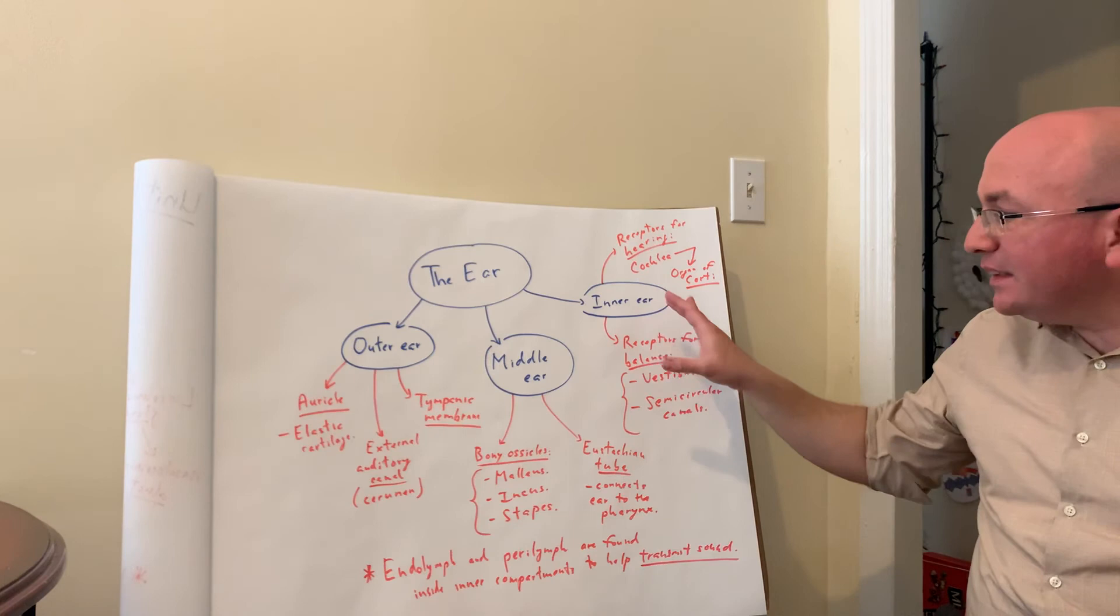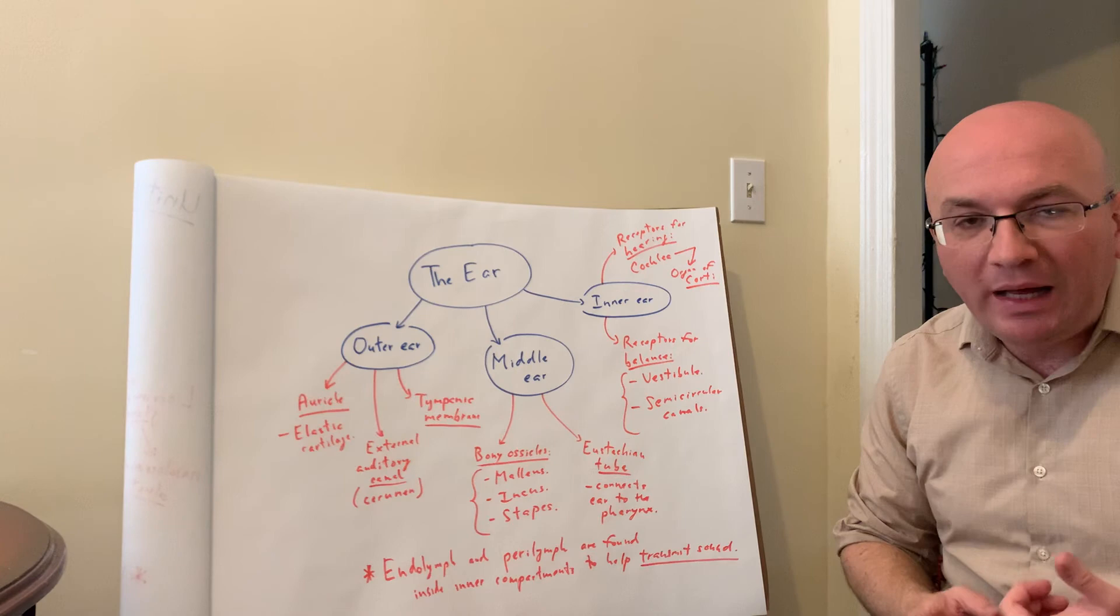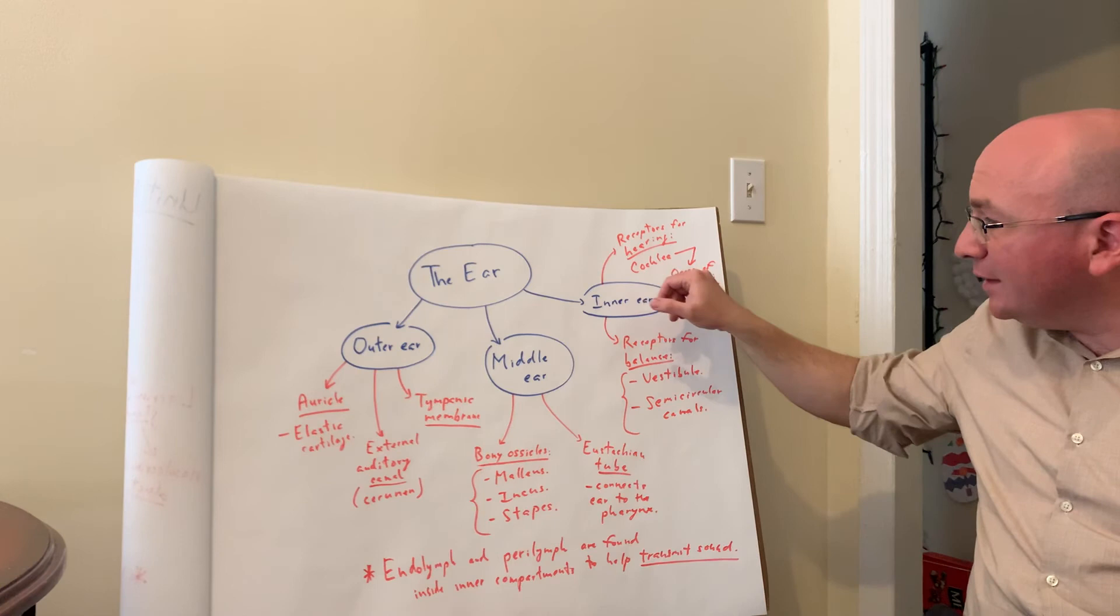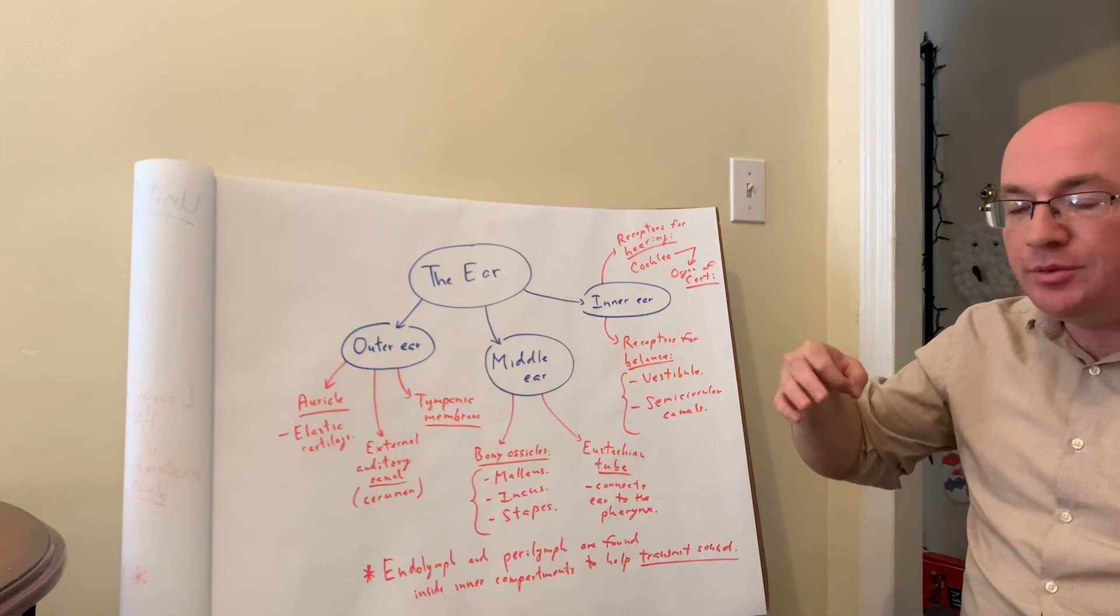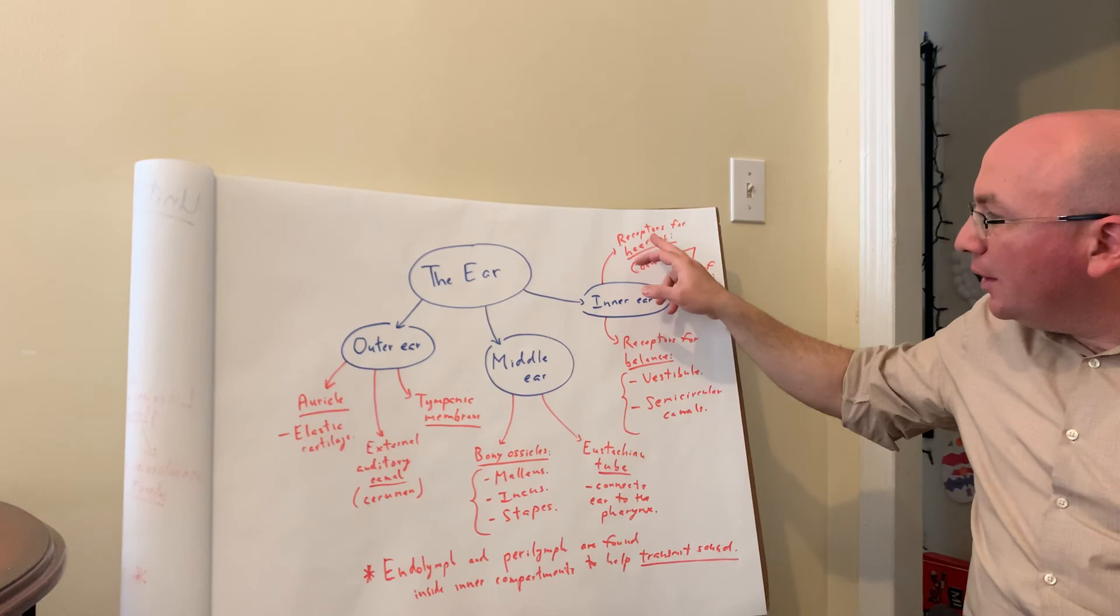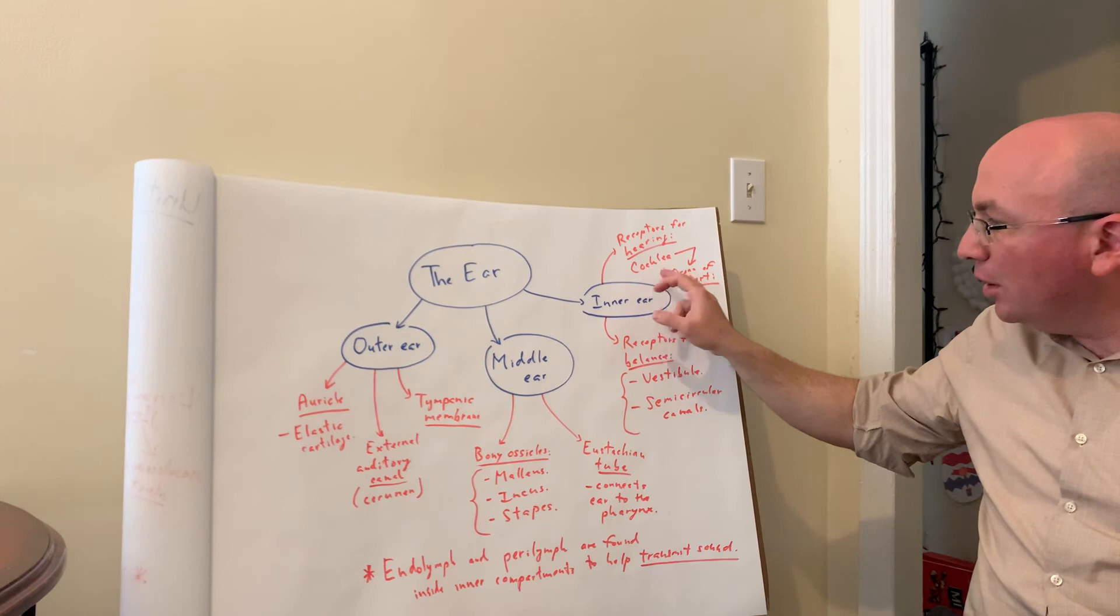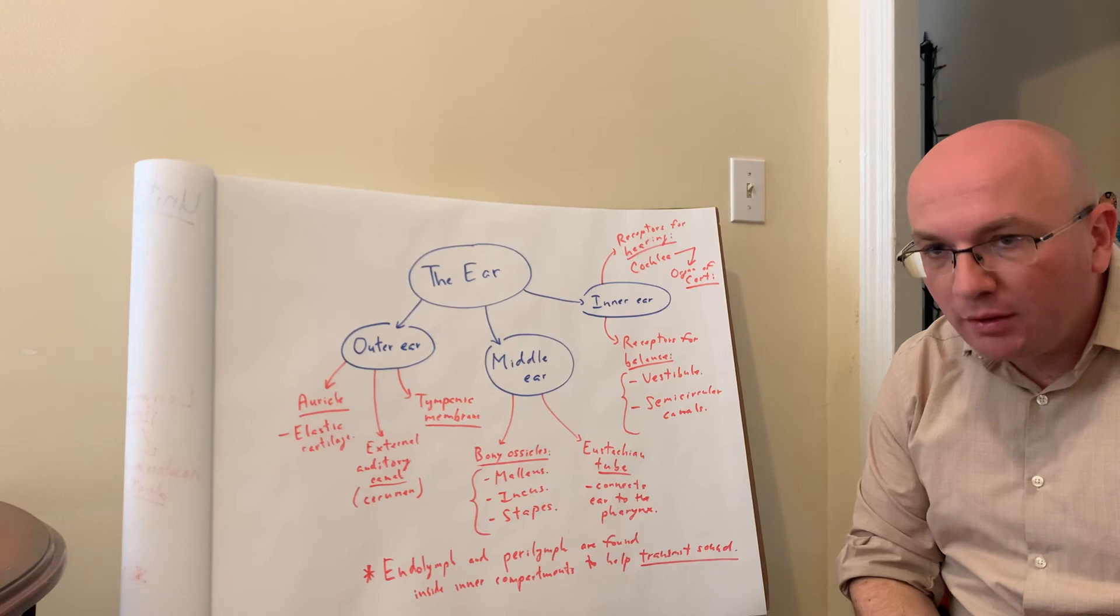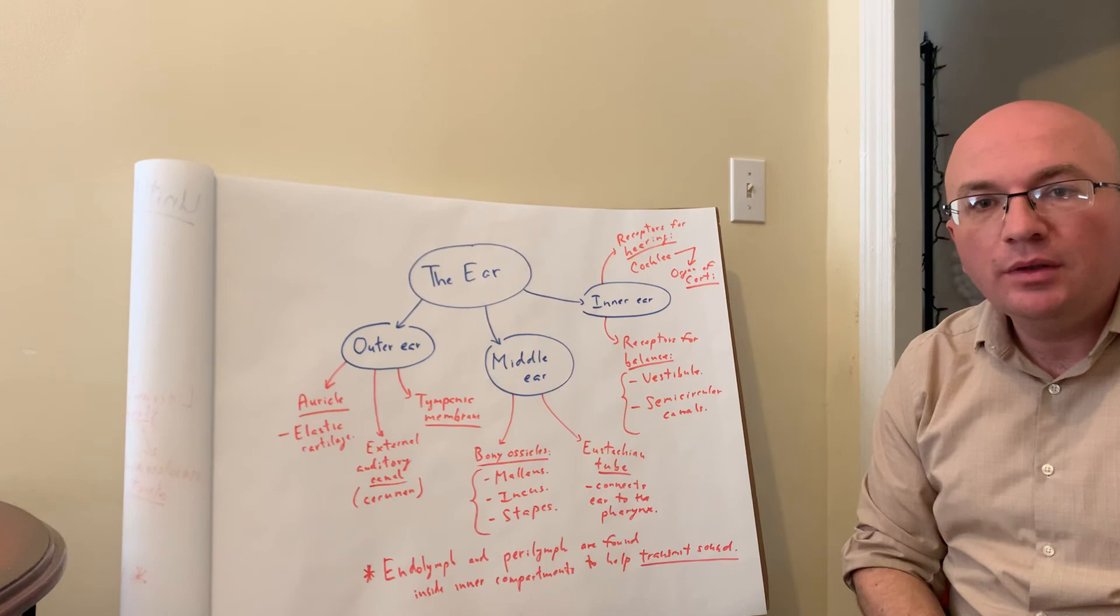And the last component, the inner ear, the actual portion that we use to hear and to process balance or equilibrium information. There are two separate mechanisms there. One is the one that looks like a snail. That's the cochlea. This is the area that contains the organ of Corti with the actual receptors, these are mechanoreceptors, for transmission of the sensation of sound. The receptors for hearing are located in the snail-like organ, in the cochlea, which contains the organ of Corti. These are microscopic components, but you can still see them in the illustrations and on histology slides. And this is where the mechanism is connected to the vestibulocochlear nerve for processing of hearing information.